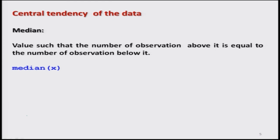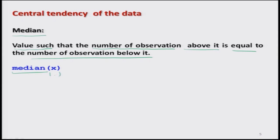The next popular measure of central tendency is the median. The median is the value which divides the entire frequency into two equal parts — the number of observations above it and below it are the same. In R, there is a direct function: median(X), where inside the argument you simply give the data vector.